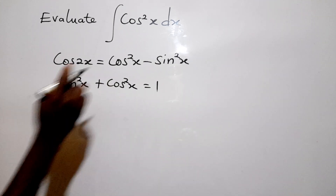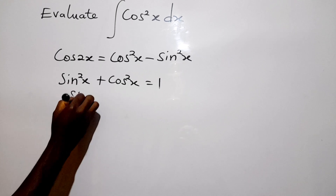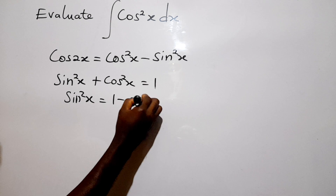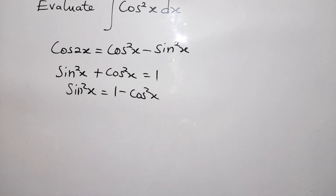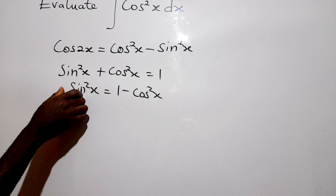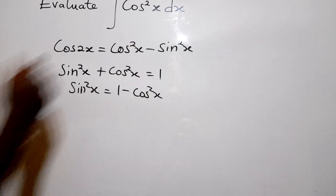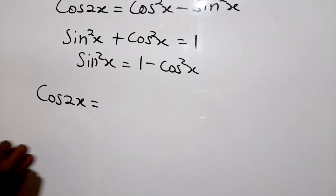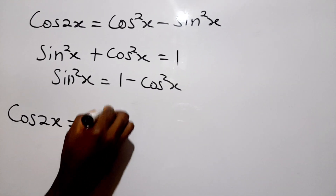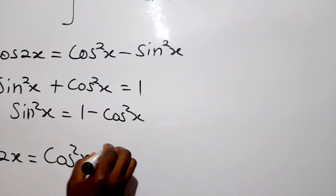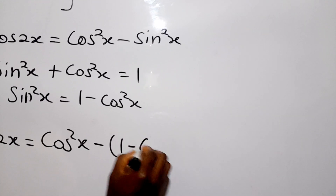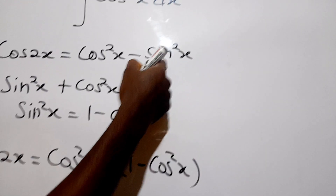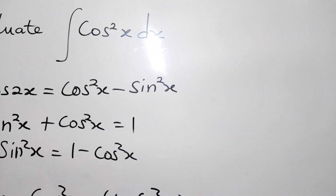From this we can say that sine squared x is equal to one minus cos squared x. So we can substitute sine squared x into the double angle formula and say that cos 2x is equal to cos squared x minus (one minus cos squared x).